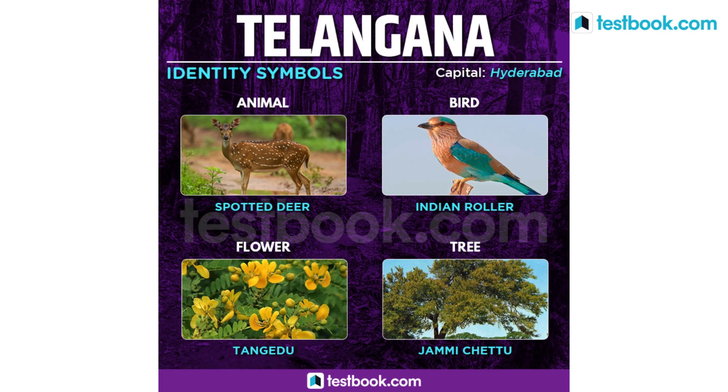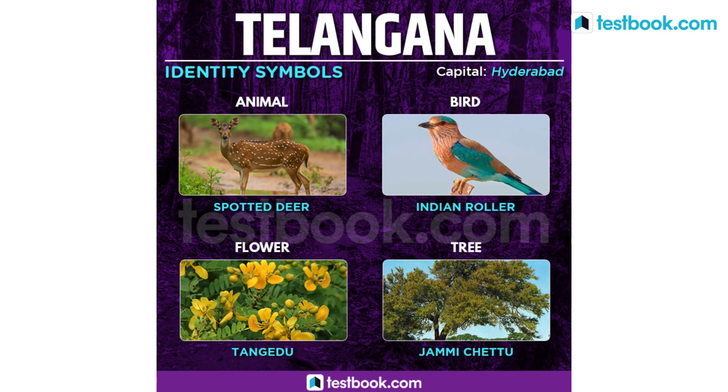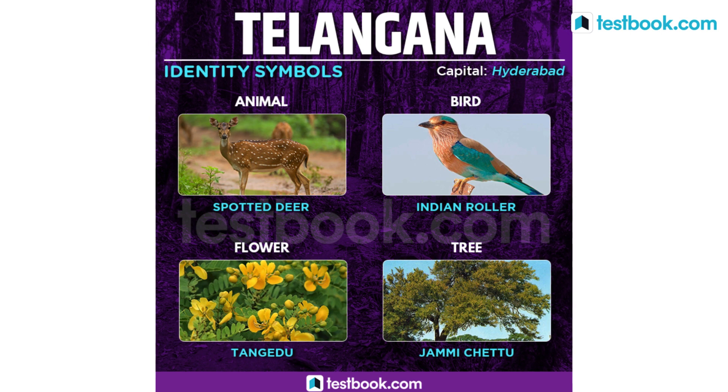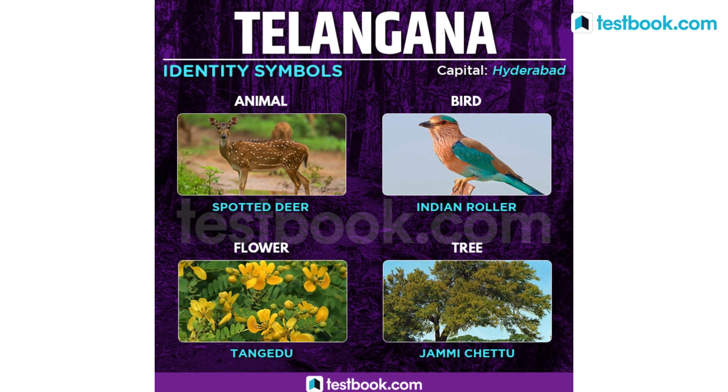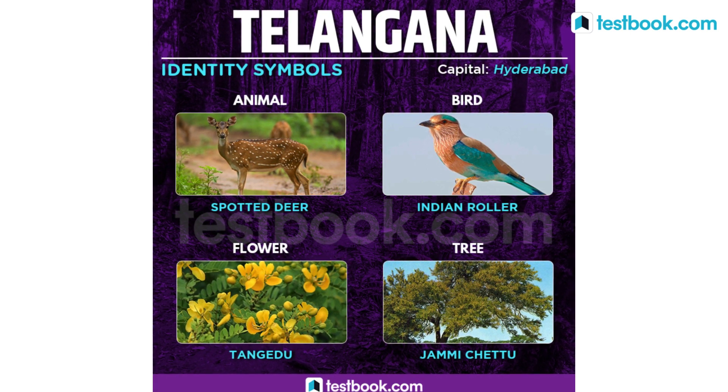The state animal for Telangana is Spotted Deer, state bird is Indian Roller, state flower is Tangedu and state tree is Jammi Chettu.